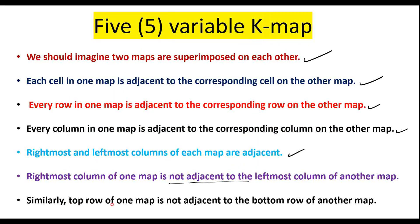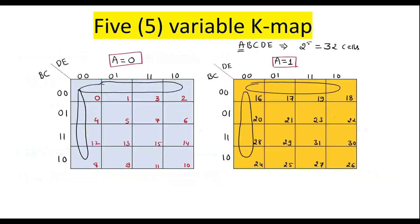Similarly, the top row of one map is NOT adjacent to the bottom row of the other map. That is, the row 0, 1, 2, 3 is not adjacent to row 24, 25, 26, 27; and row 16, 17, 18, 19 is not adjacent to row 8, 9, 10, 11. This is the overview of the 5-variable Kmap.